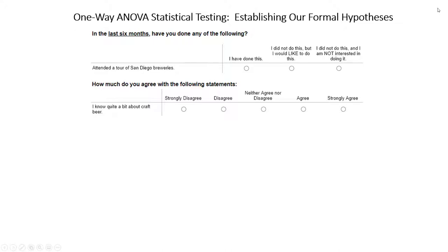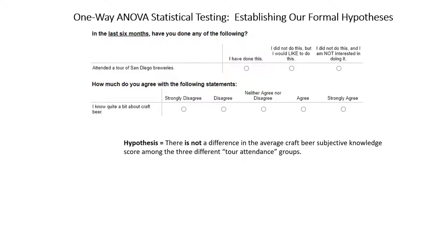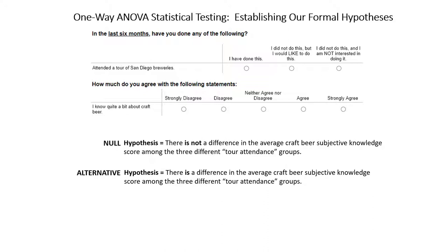Now let's set up our hypotheses. The null hypothesis is that there is no difference in the average craft beer subjective knowledge scores among the three different tour attendance groups. The alternative hypothesis encapsulates all other possibilities: there is a difference in the average craft beer subjective knowledge score among the three groups. For the one-way ANOVA, we're not saying every group is different from every other — just that there is a difference somewhere, at least between two of the groups.